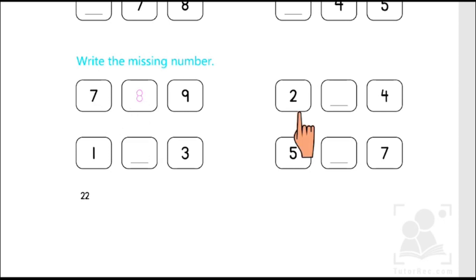2, missing number, and 4. So let's just start counting with me. 1, 2, 3, 4. Yes! Number 3 is missing. So we are supposed to write 3 over here.